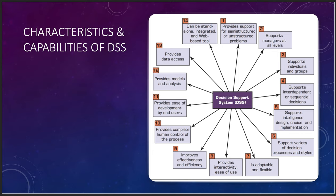Decision support systems are a major part of this. There are 14 key characteristics. First: provide support for semi-structured and unstructured problems — your data will come in all three formats and you want to be able to take in any data source into your data lake. Second: support managers at all levels. A production floor manager needs to see how all machines are working; if there's a problem, it gets flagged and that person is notified.